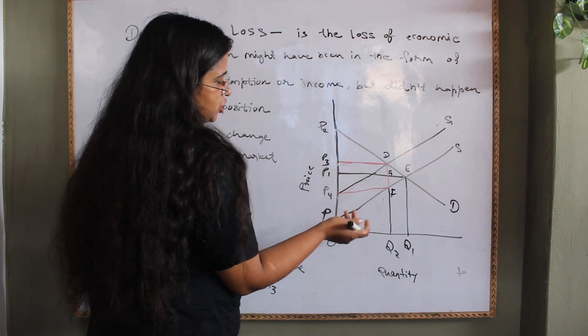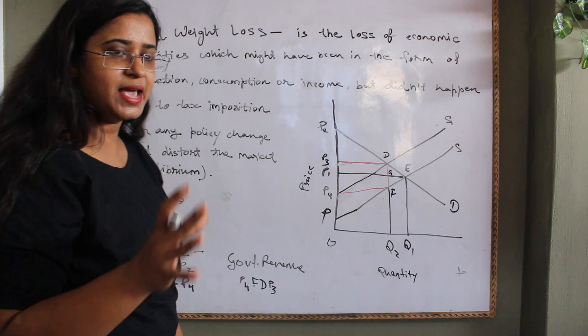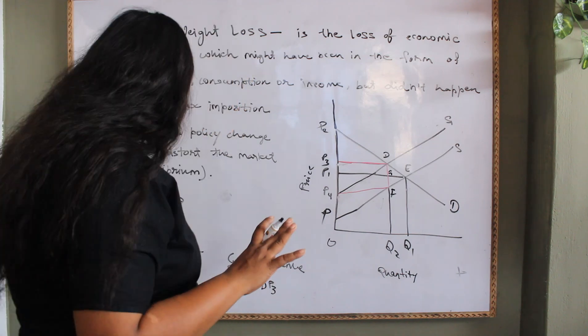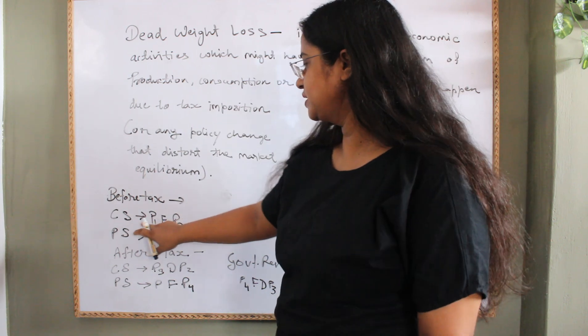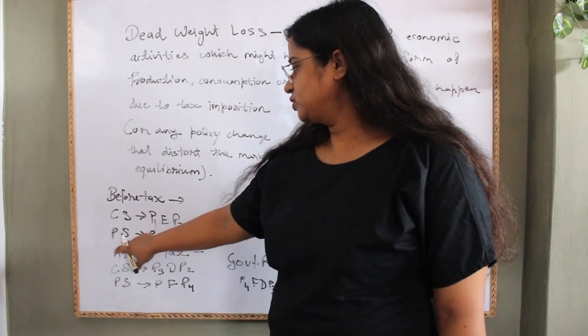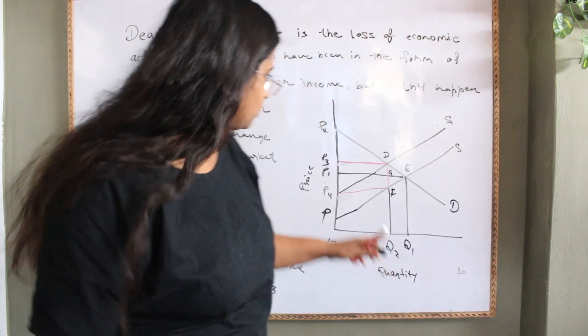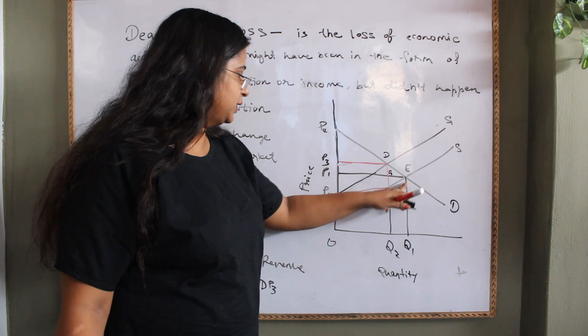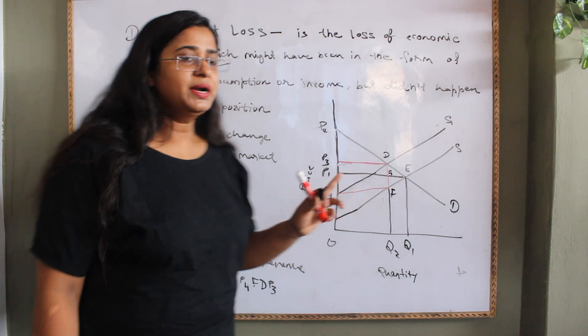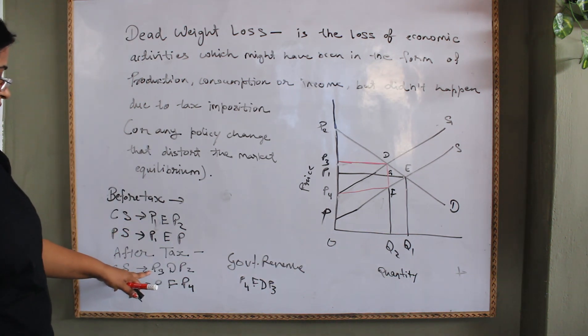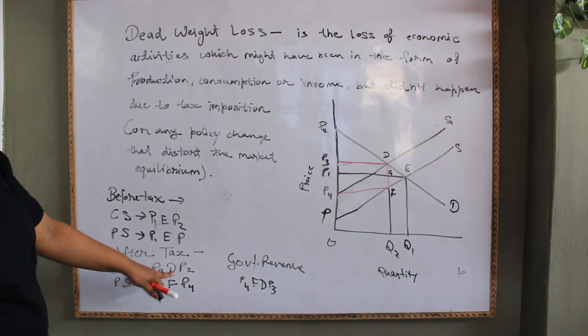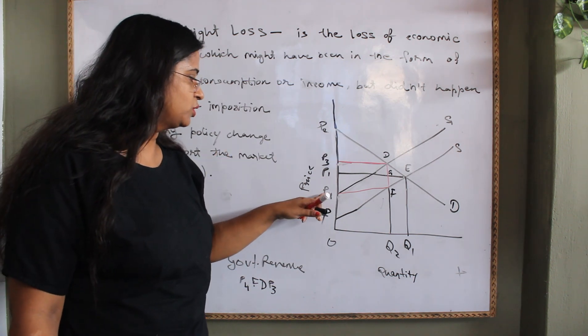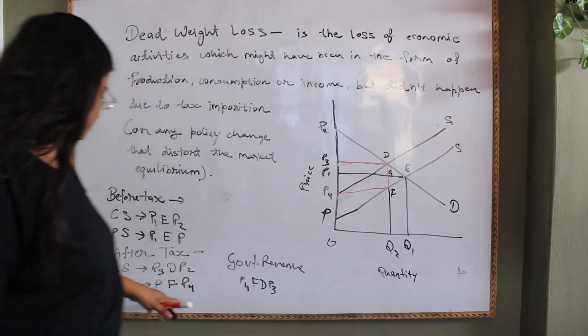After tax imposition, the area of the consumer surplus has been shrinked as well as the area of the producer's surplus. Before tax, consumer surplus was P1EP2 and producer surplus was P1EP. But after tax, consumer surplus has been reduced to P3DP2 and the producer surplus has been reduced to P4FP or PFP4.